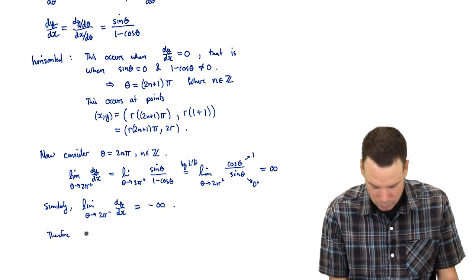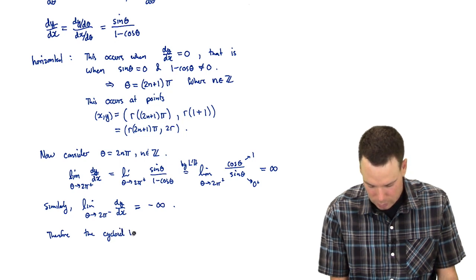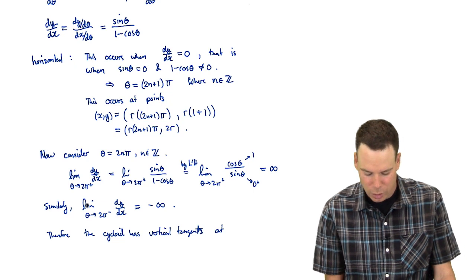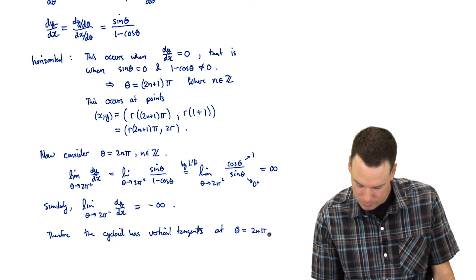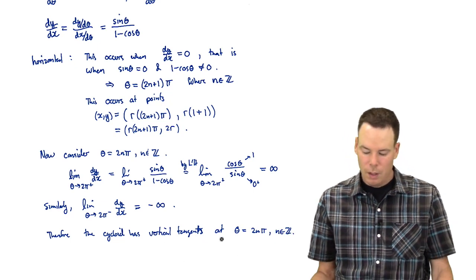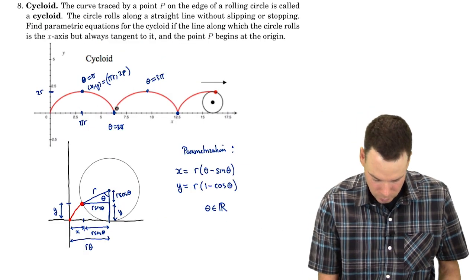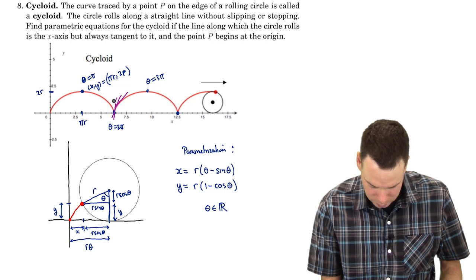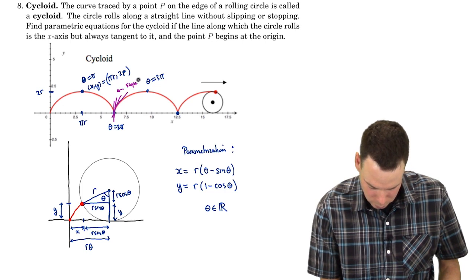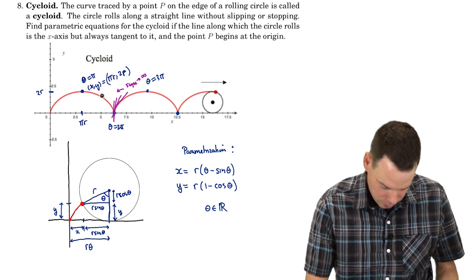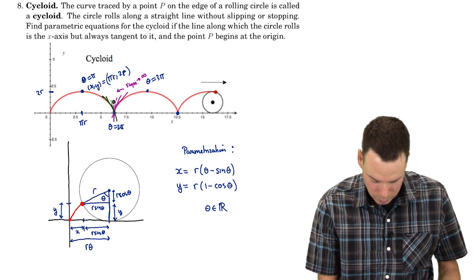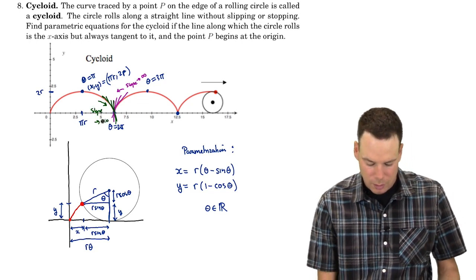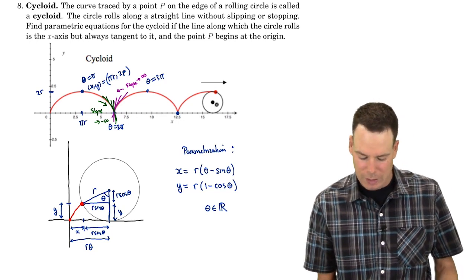And therefore, the cycloid has vertical tangents at, well it has it at this 2pi, but the same argument happens for all even multiples of pi where n is an integer. And if we look back at our diagram, we see that as we are coming towards 2pi from the right, our tangent line slopes were getting steeper and steeper in the positives. So as we go this way, our slopes were heading towards infinity. Whereas on the other hand, as we are heading towards 2pi from the left, as we are heading in this direction, the slopes were going towards negative infinity. And we got that there was a vertical tangent line there. Same argument happens at the other even multiples of pi.